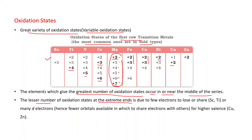At the other end, copper and zinc have many D electrons which become paired, so fewer orbitals are available to share electrons with others for higher valences. That is why copper and zinc also show a lesser number of oxidation states.